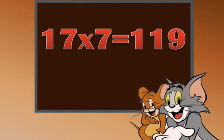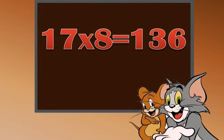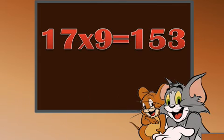17 sevens are 119. 17 eights are 136. 17 nines are 153.